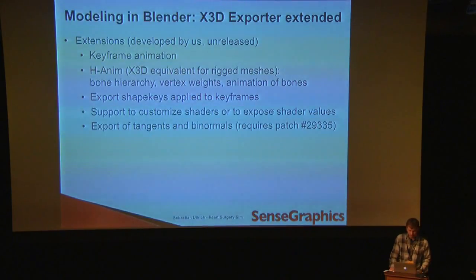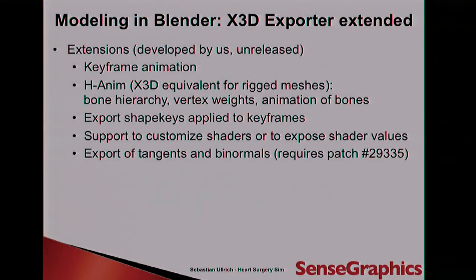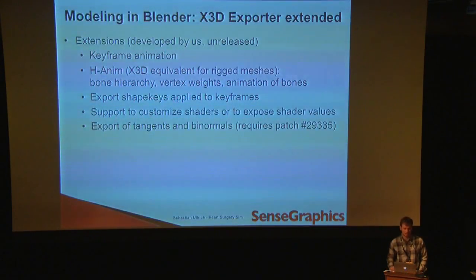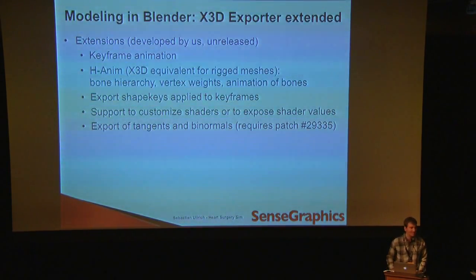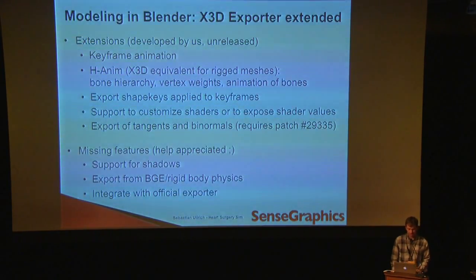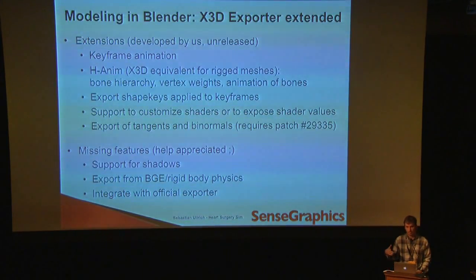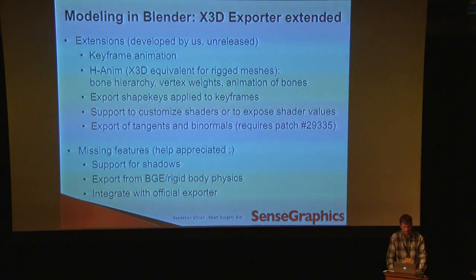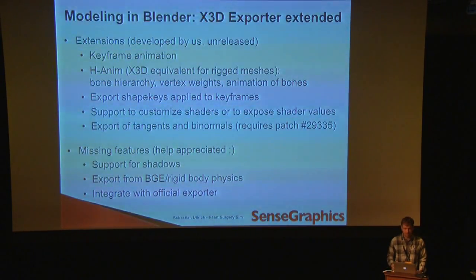Another important point is that we also need access to tangents and binormals, which normally cannot be accessed in the Blender Python API, so we are using a patch that has been around. There are still some features missing — for example, we would like to export shadows and access parts of the Blender game engine to export physics properties. As mentioned, we also want to bring back our extensions to the official exporter.